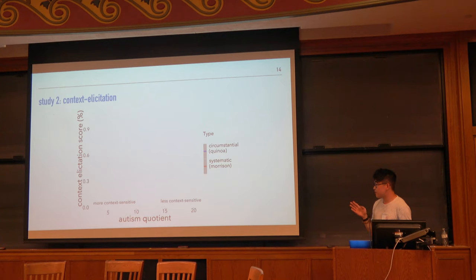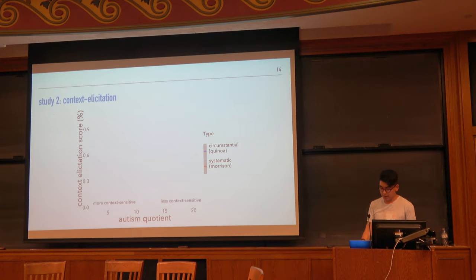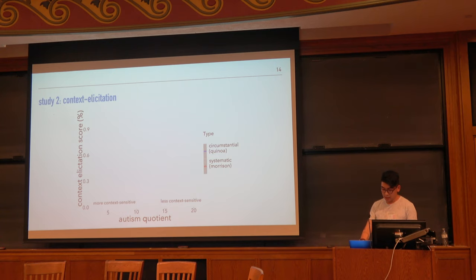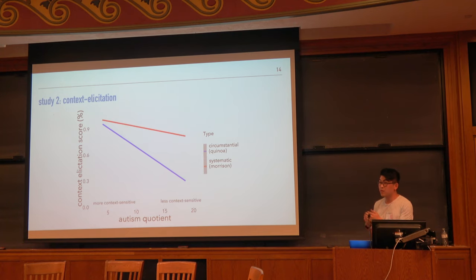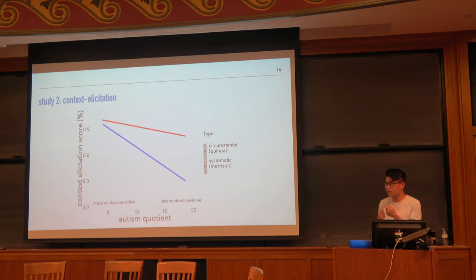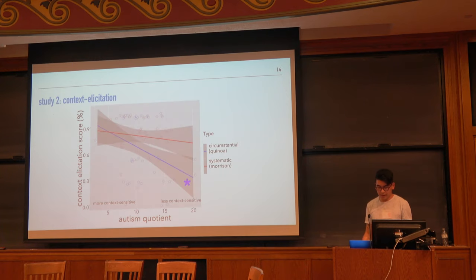Let's look at the same data plotted as a function of AQ. More context-sensitive is on the left, and less is to the right. We expect a negative correlation: the higher your AQ, the less context-sensitive you are, and therefore the worse you perform on this task. Specifically, the correlation for circumstantial should be more pronounced, because in that condition you really need to be using contextualization ability. Whereas for systematic, you already get quite a bit of information just from the predicate — just from read or sing. And that's exactly what we find: the blue correlation is significant and the red one is not.